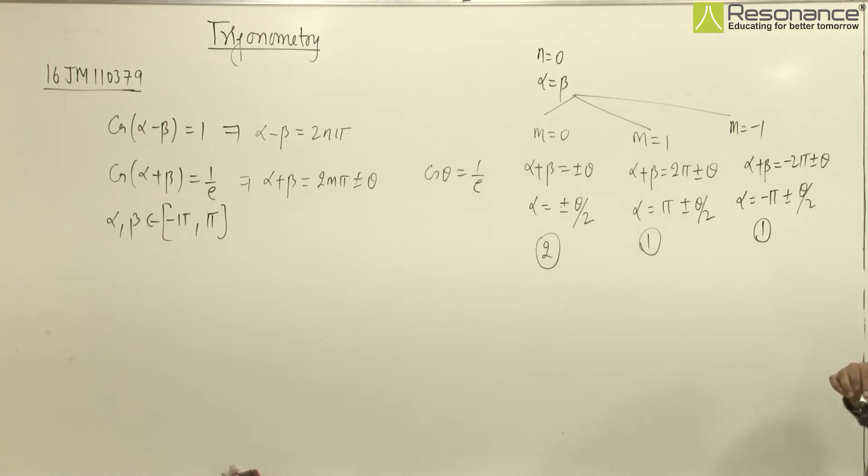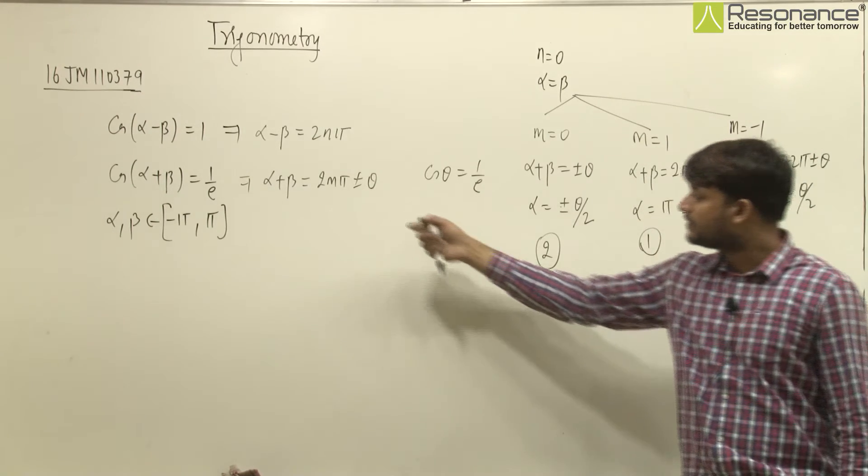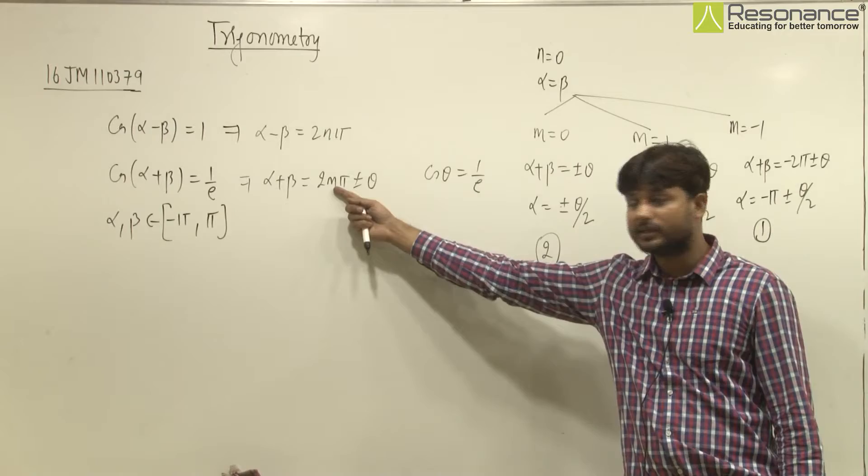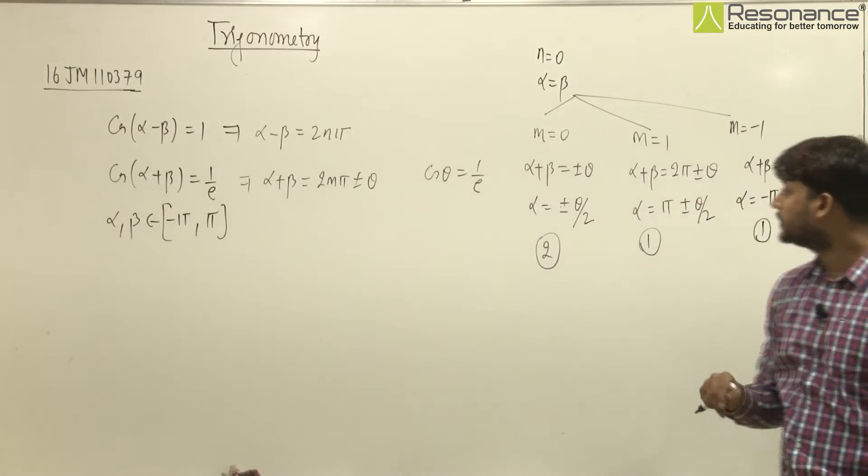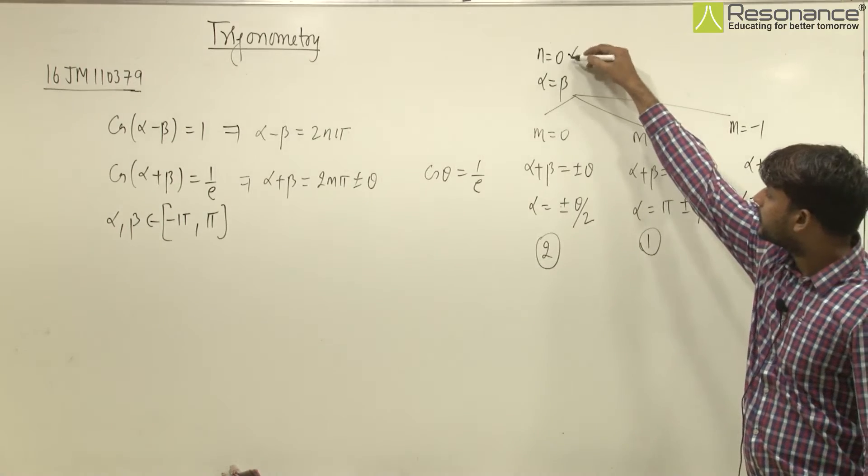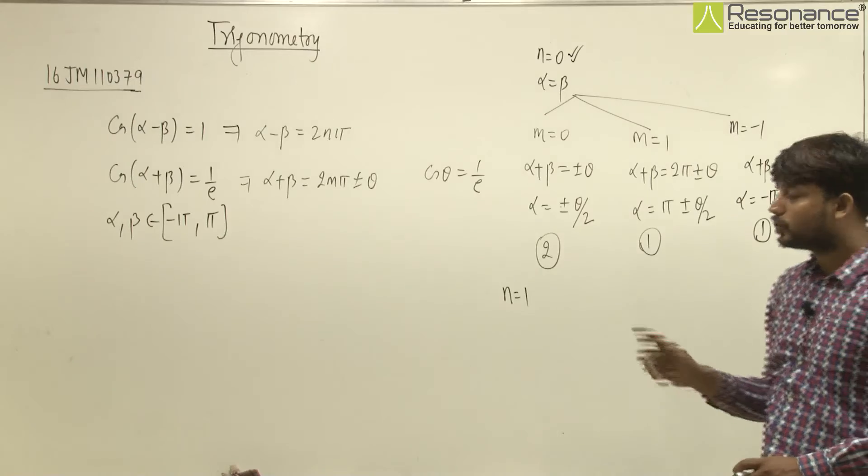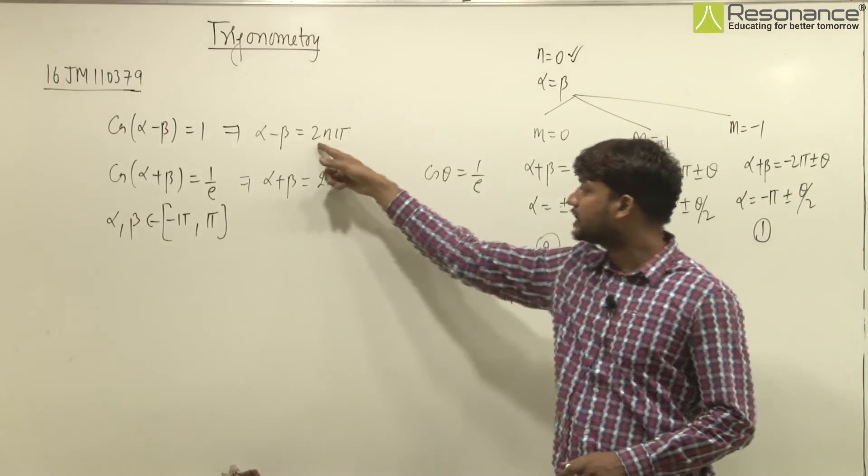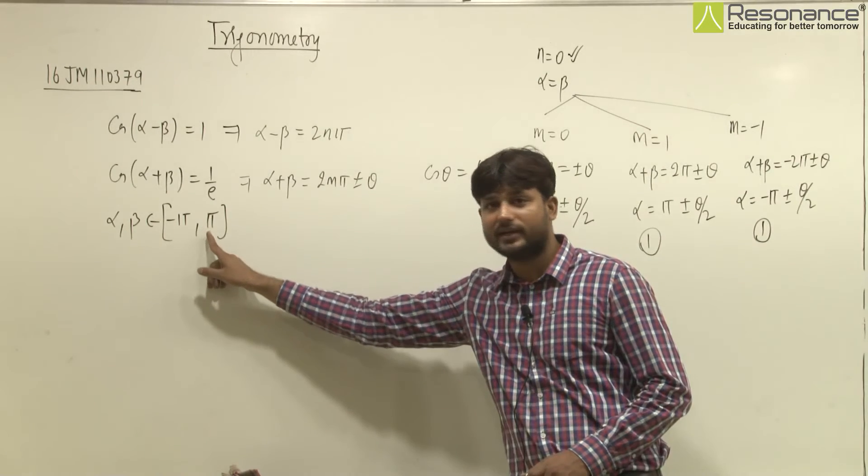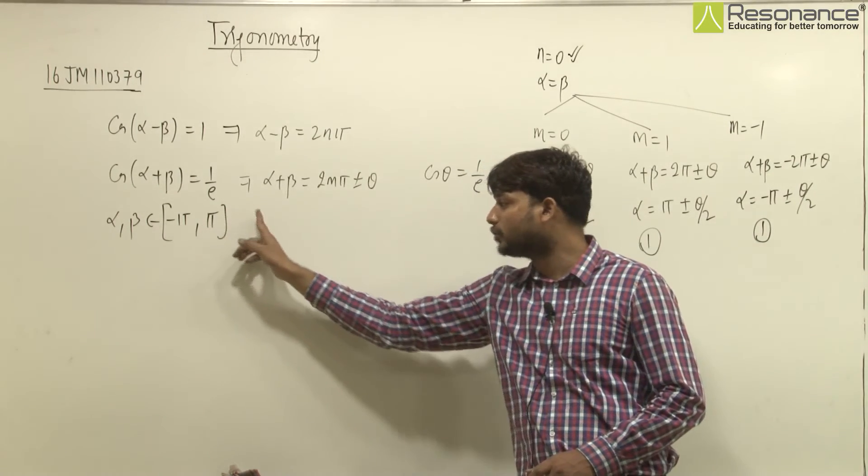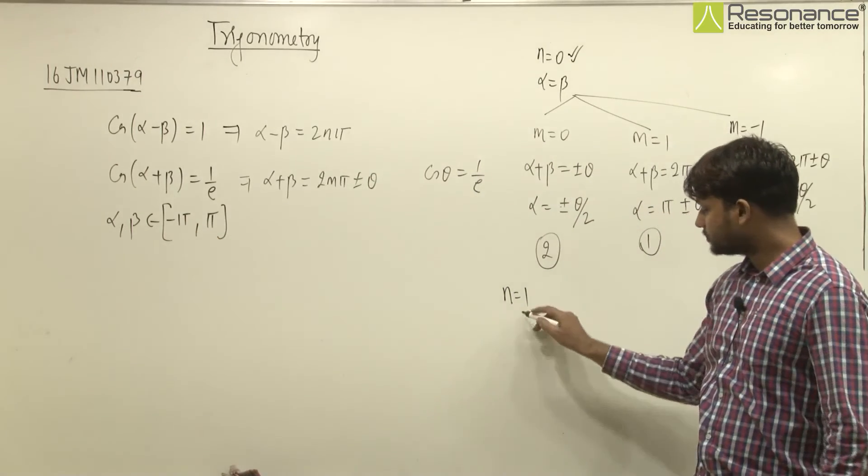Now if we increase m's value beyond 1, alpha plus beta will be 4 pi. In any case that value will not come in this interval. So now we have to put n's value as 1 instead of 0. If we put 1, then alpha minus beta's difference will be 2 pi. And in this interval, if we take 2 pi difference, then one value has to be greater than pi or one has to be less than minus pi. So in this case also we will not get any ordered pair.